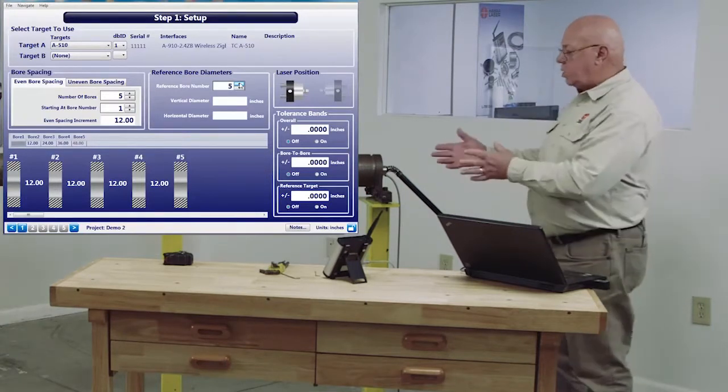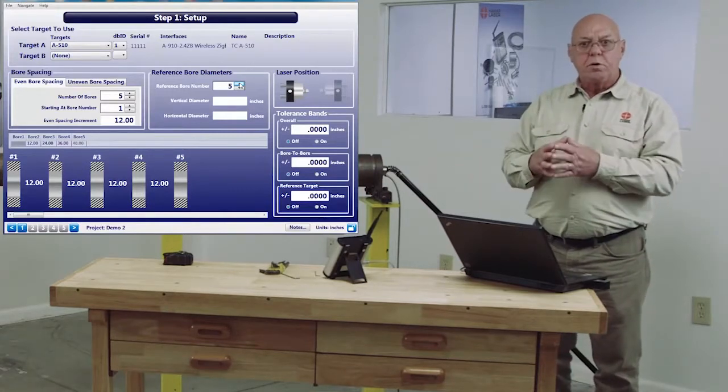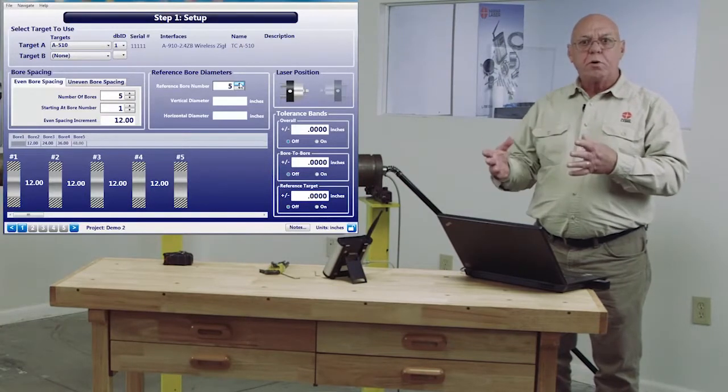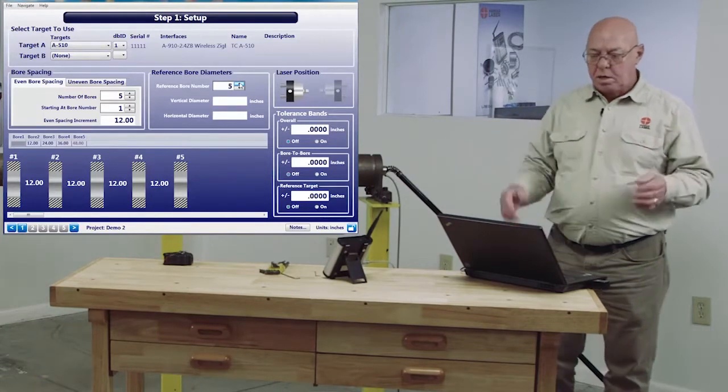In other words, I can't just put the target in there and it knows what the diameter is. I have to tell the program what the diameter, the starting diameter is. Then the program will tell me the different diameters based on wear.